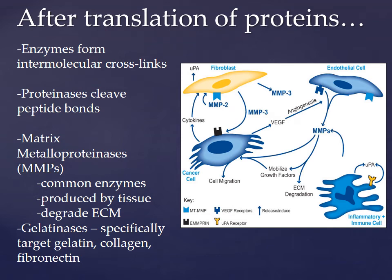After the proteins are translated, enzymes within the body begin to form intermolecular crosslinks and proteinases that will cleave or slice the peptide bonds of the protein. Matrix metalloproteinases, or MMPs for short, are one common type of enzyme produced by the surrounding tissue. MMPs function to specifically cleave peptide bonds and to degrade the extracellular matrix.